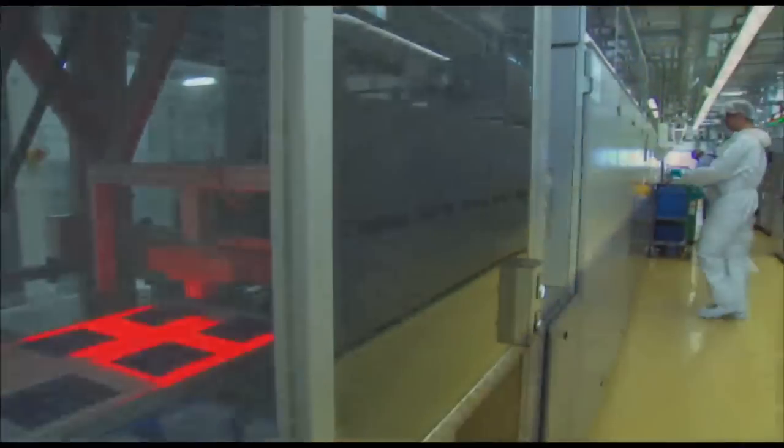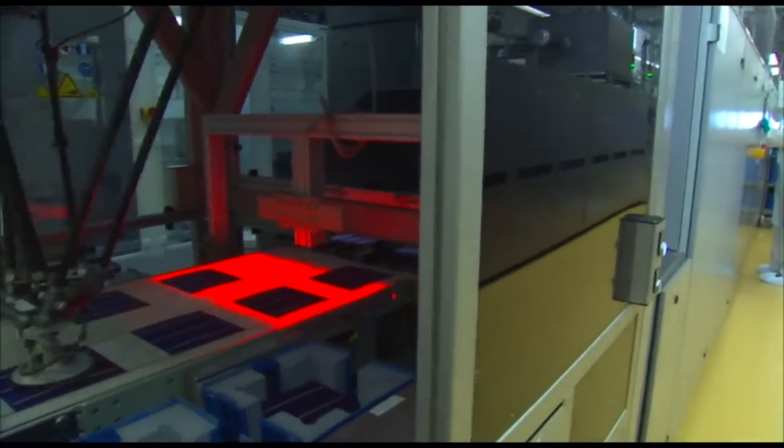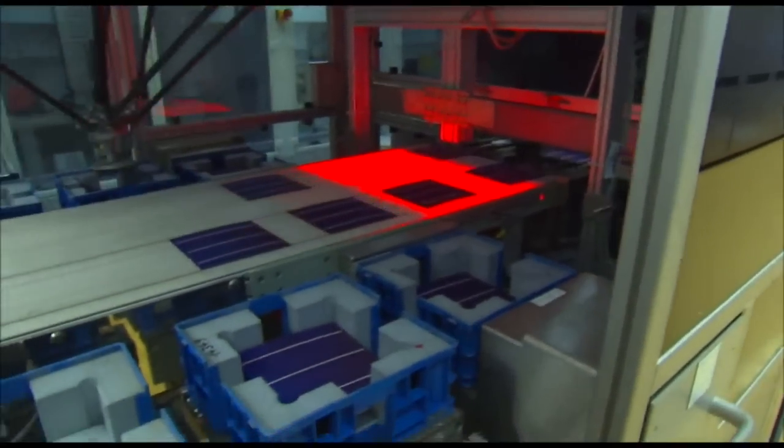High-performance furnaces then burn the contacts into the silicon. The solar cell is now permanently bonded with its current collectors.